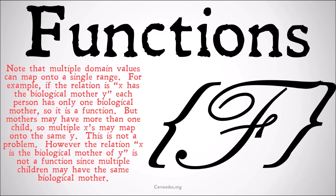Note that multiple domain values can map onto a single range. For example, if the relation is 'x has the biological mother y', each person has only one biological mother so it is a function. But mothers may have more than one child so multiple x's may map onto the same y.